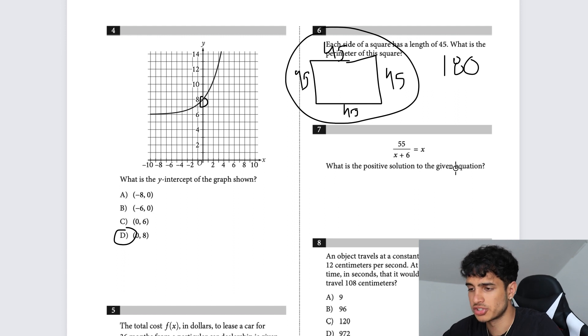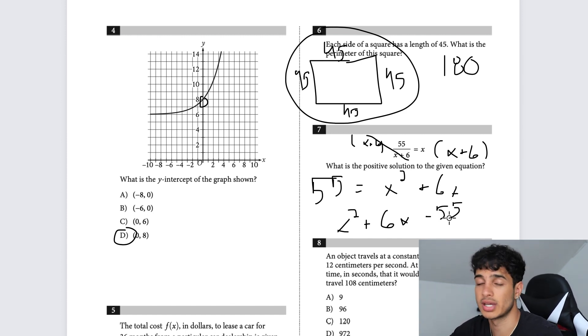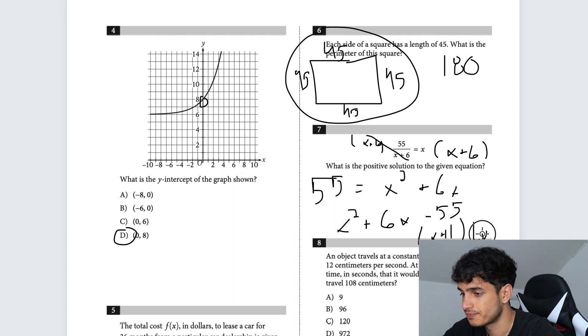What is the positive solution to the given equation? Let's get that denominator out. 56 equals X squared plus 6X. Subtract 56 from both sides: X squared plus 6X minus 56. Factor it: what two numbers add to give 6 and multiply to give negative 56? 11 and negative 5. So X plus 11 times X minus 5. The positive solution is 5.